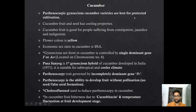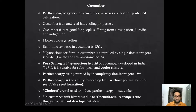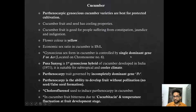Parthenocarpic gynoecious cucumber variety is best for protected cultivation. Cucumber fruit and seed have cooling properties. Cucumber fruit is good for people suffering from constipation, jaundice, and indigestion. Flower color is yellow. The economic sex ratio in cucumber is 15:1 — 15 female to 1 male. Gynoecious sex form in cucumber is controlled by a single dominant gene F (ACR), located on chromosome number 6. This question was asked in NET 2019.